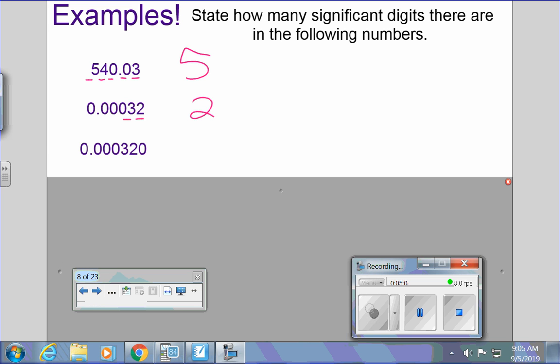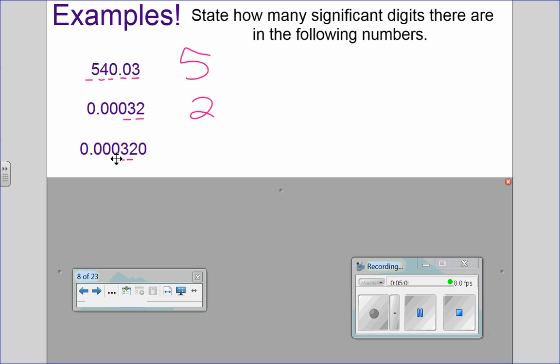Try this one. Who thinks we've gotten the answer? Caspian? Three. Good. Good. So she's going to count the three, the two, and the zero. So that's three total.